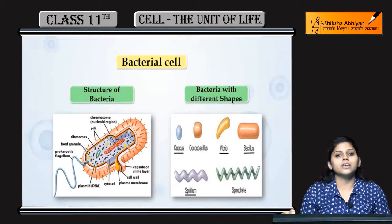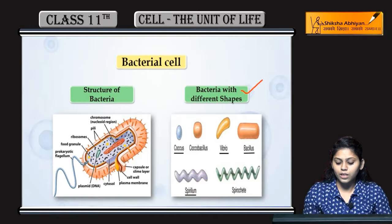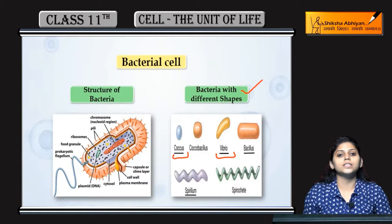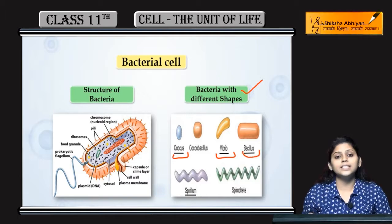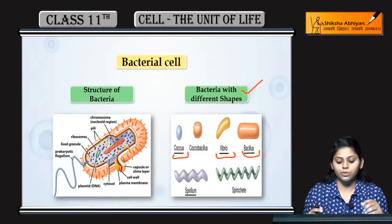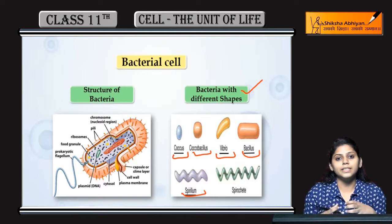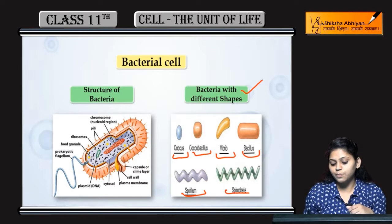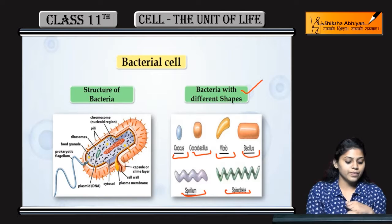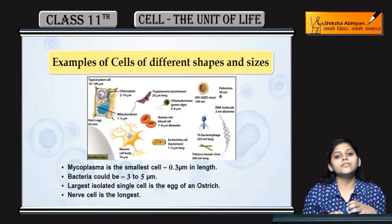We have seen the bacteria structure. Now we will see bacteria with different shapes: coccus, which is spherical shape; vibrio, which means comma-like; bacillus, which is cylindrical shape; and spirillum, which is spiral shape. Some coccobacillus is a combination of coccus and bacillus shape, and spirochete. Now we will see different cells.